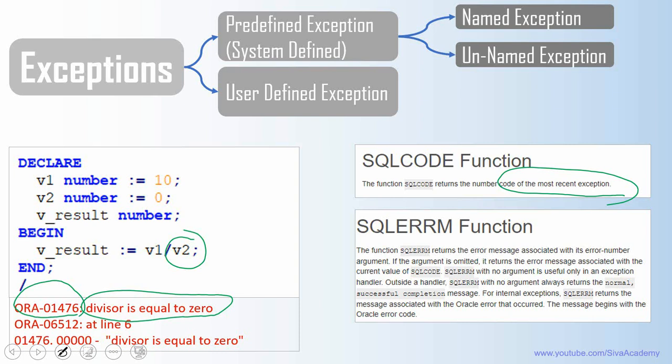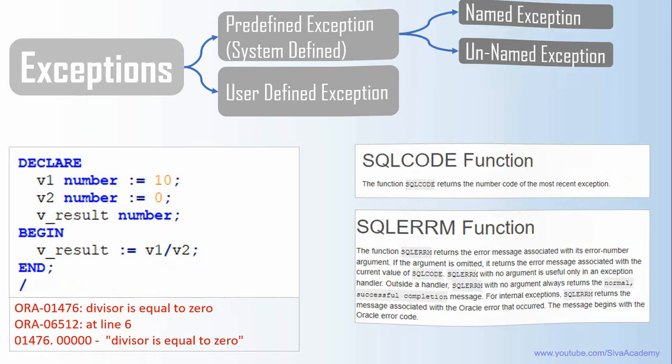We will be using both SQLCODE and SQLERRM in the exception handling section, mainly to log the information into the log table. Because whenever we want to debug or during the production support time, the exceptions will help us to identify what would have potentially caused the problem in the system. Now, let us see how to use SQLCODE and SQLERRM through three examples. One for named exception category, another for unnamed exception category, and one more for user defined exception category.